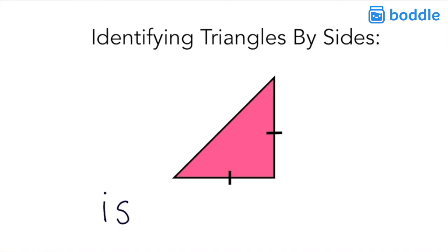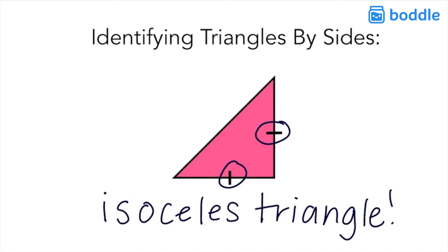This triangle is an isosceles triangle. I noticed that even though there are no numbers on this shape, there are those two lines that recognize that both of those sides are equal. And when a triangle has two equal sides, it's an isosceles triangle.